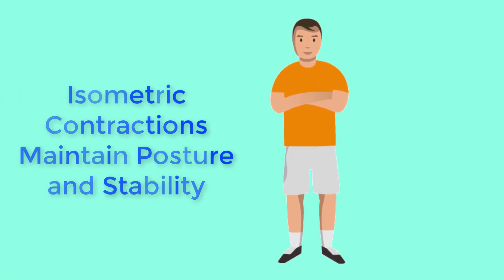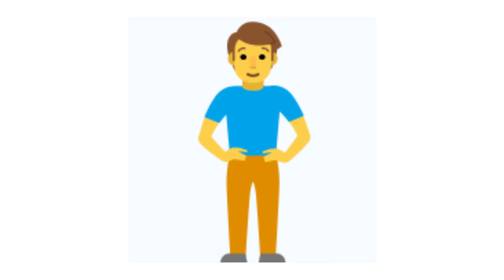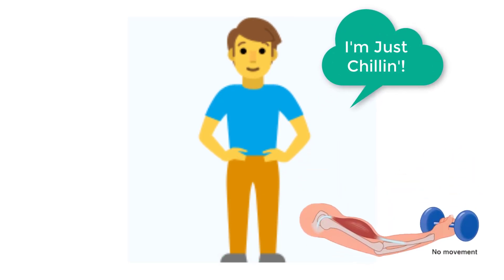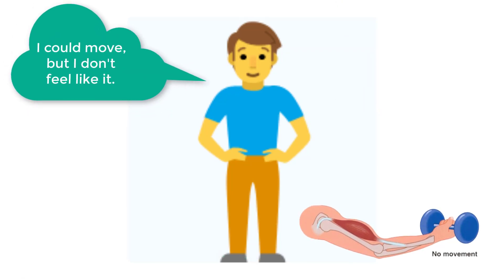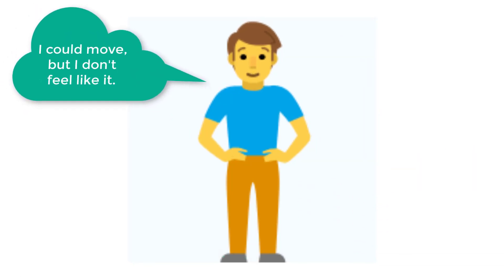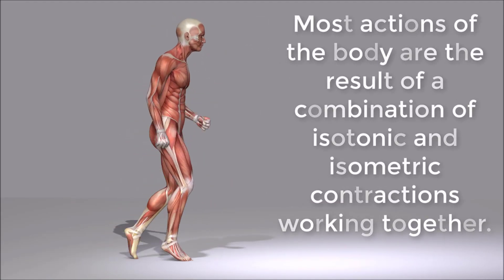In everyday living, isometric contractions are active in maintaining posture and maintaining bone and joint stability. However, holding your head in an upright position occurs not because the muscles cannot move the head, but because the goal is to remain stationary and not to produce movement. Most actions of the body are a result of a combination of isotonic and isometric contractions working together to produce a wide range of outcomes.